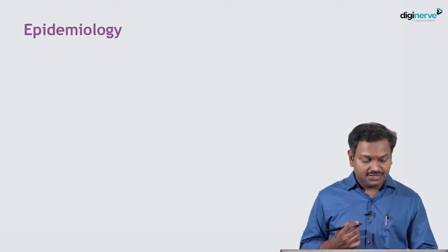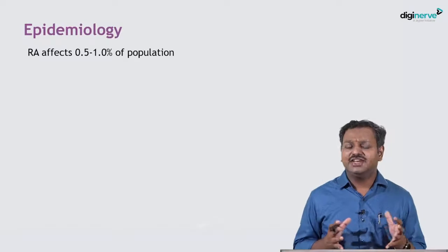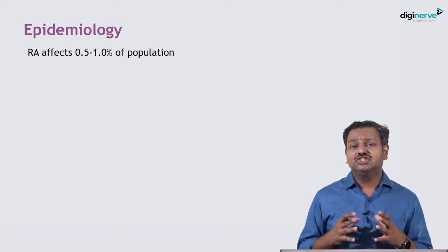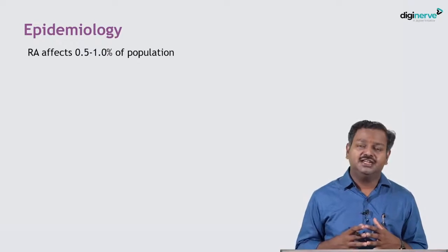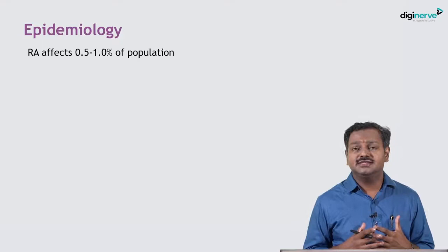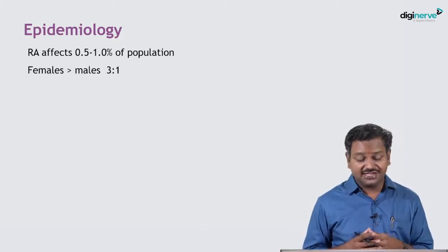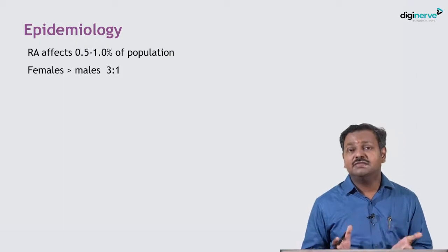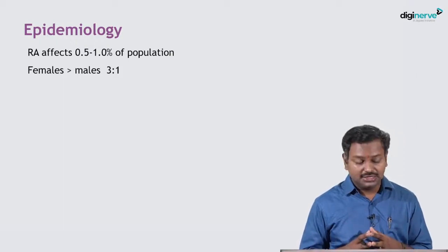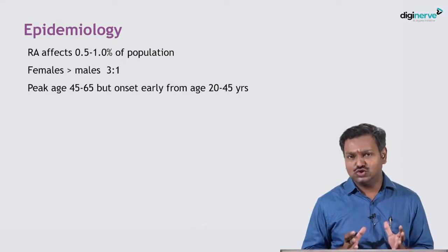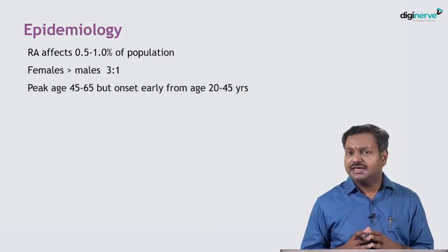In terms of epidemiology, rheumatoid arthritis affects approximately one percent of the population, with geographic variations. Females are predominantly involved in a 3:1 ratio compared to males. The peak age is usually 45 to 65, though it can occur in younger patients between 20 to 45 as well.